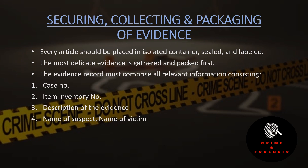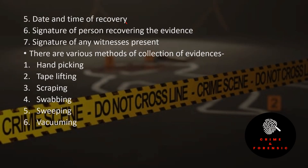The most delicate evidence is gathered and packed first — evidence that can deteriorate quickly is packaged first. The evidence record must comprise all relevant information: case number, item inventory number, who found it and who collected it, description of evidence, name of suspect and name of victim, date and time of recovery, signature of the person recovering the evidence, and signatures of any witnesses present during the crime scene investigation.